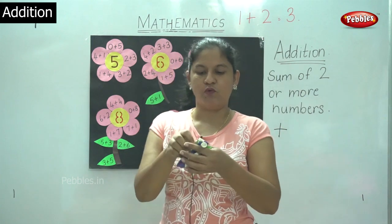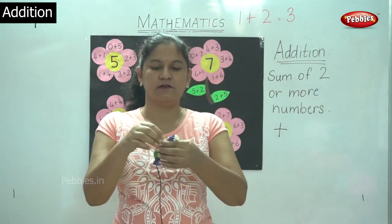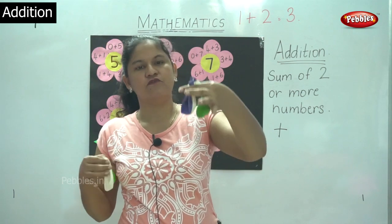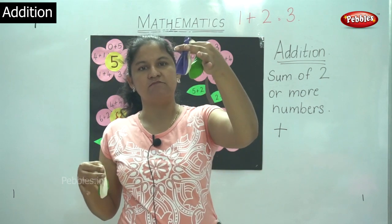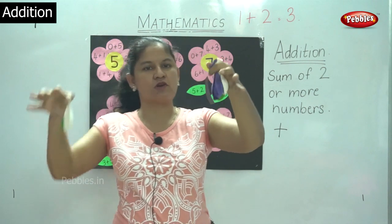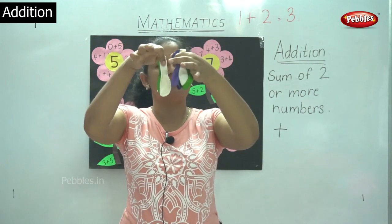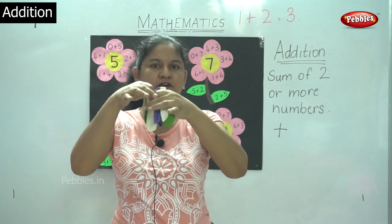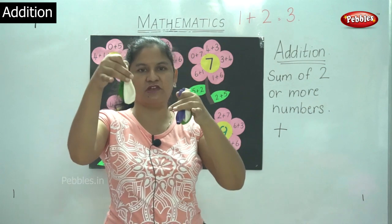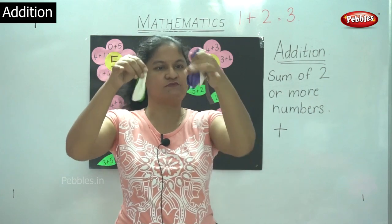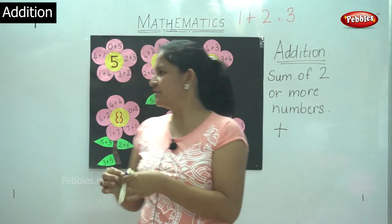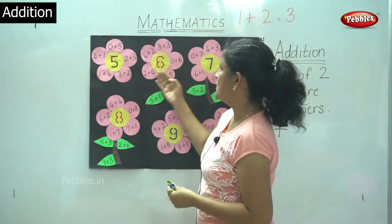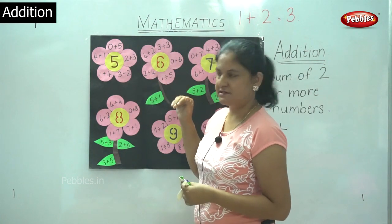Next I have 2 balloons in my right hand and 4 balloons in my left. When I total up both the right and left hand balloons I get number 6. So 4 plus 2 gives me 6 or 2 plus 4 gives me 6.